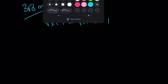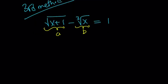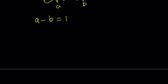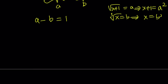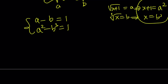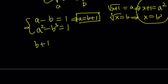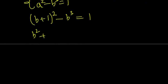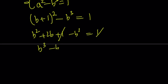I'm going to use substitution, but this time with two variables. I'm going to call the square root of x plus 1 as 'a', and the cube root of x as 'b'. So a minus b equals 1 automatically. Also, square root of x plus 1 equals a implies x plus 1 equals a squared. And cube root of x equals b implies x equals b cubed. Notice these two expressions differ by 1, so a squared minus b cubed equals 1. I get a system in two variables, and I can solve by replacing a with b plus 1. So (b plus 1) squared minus b cubed equals 1. Expanding: b squared plus 2b plus 1 minus b cubed equals 1. The 1 cancels, and putting everything on the same side gives b cubed minus b squared minus 2b equals 0.